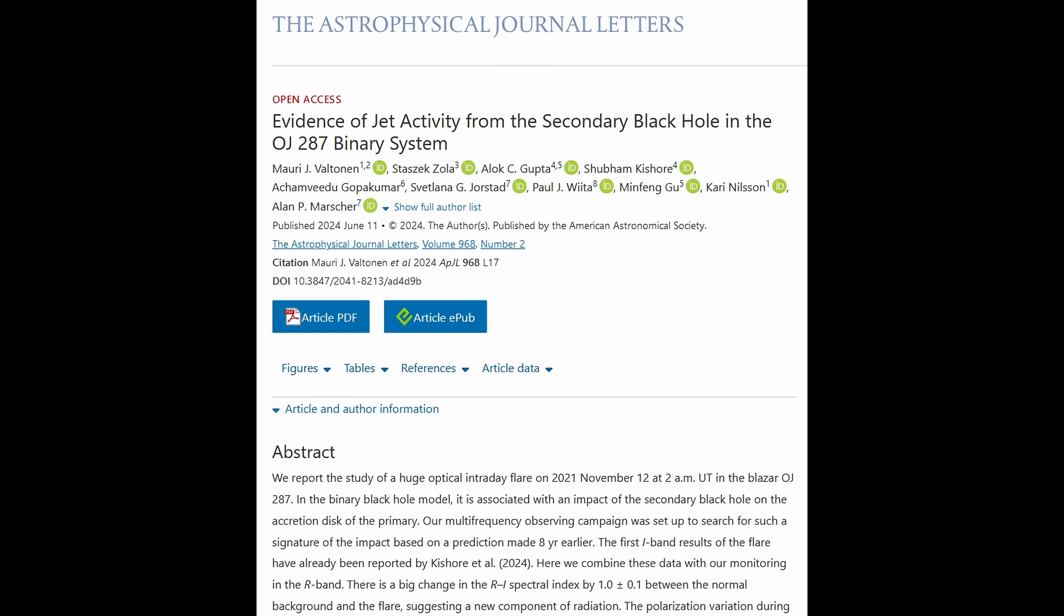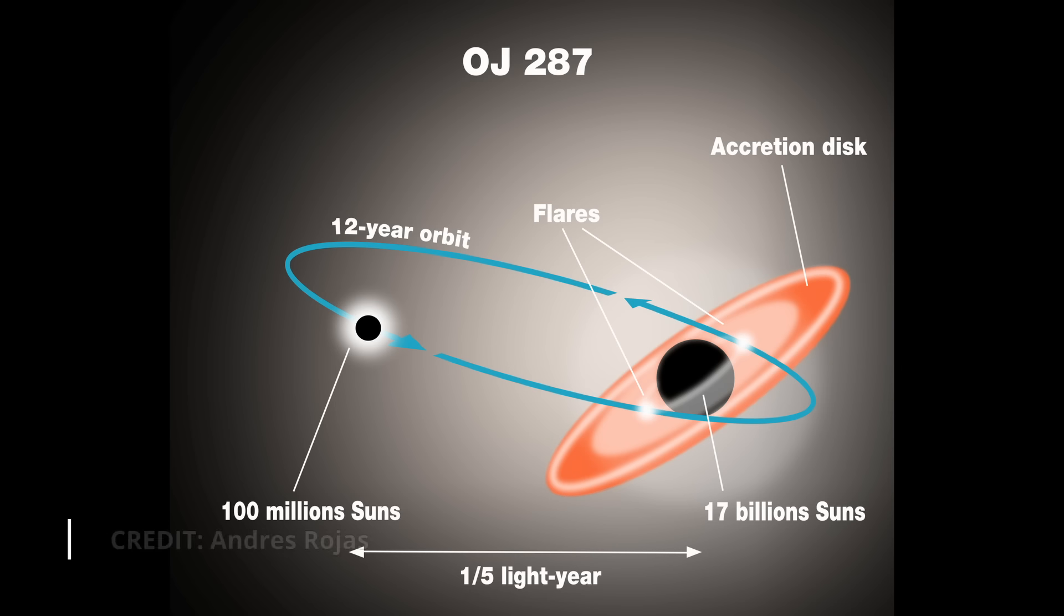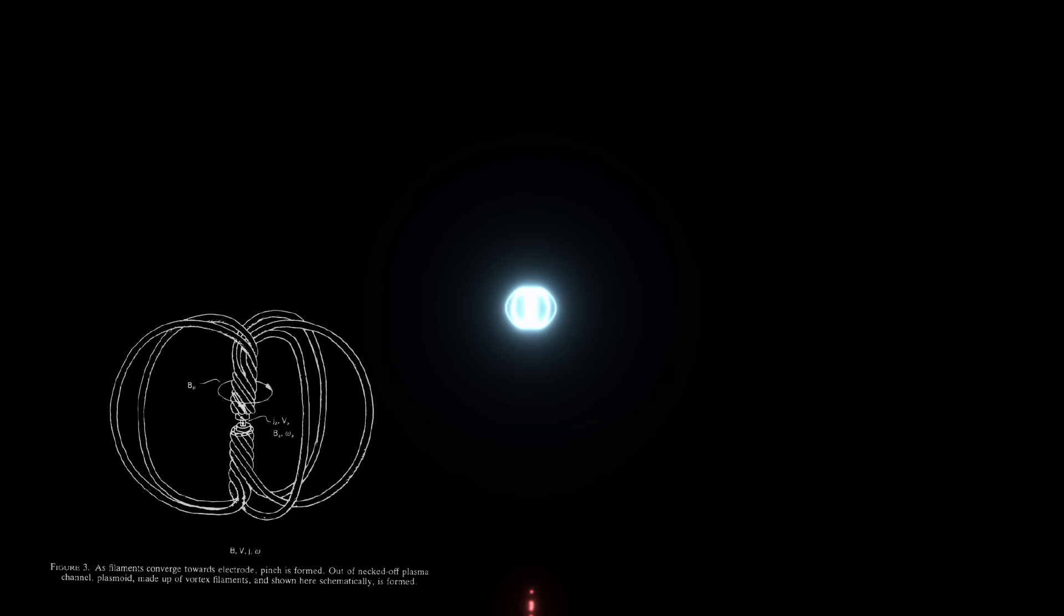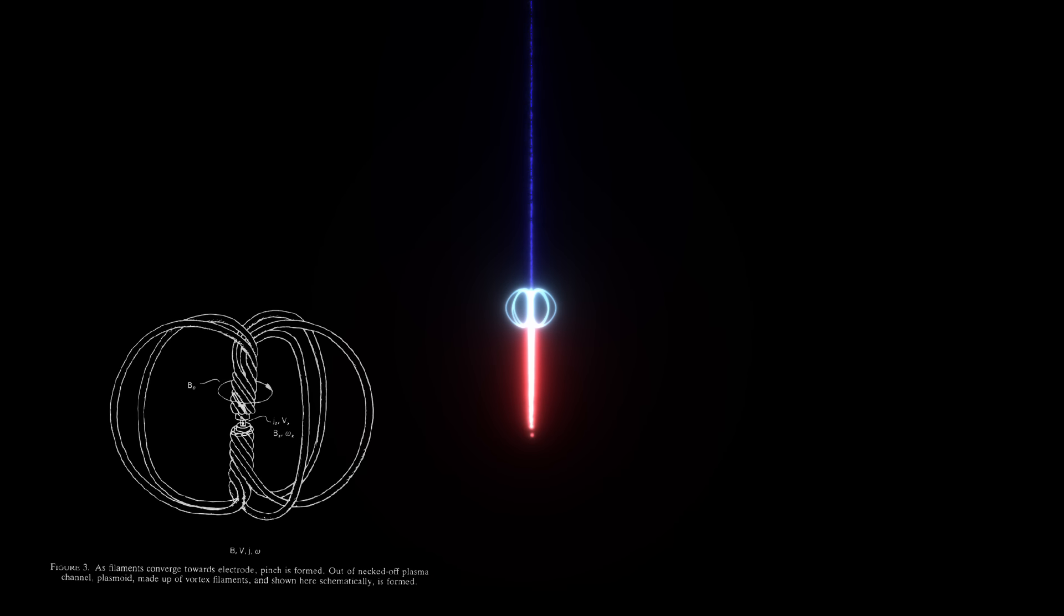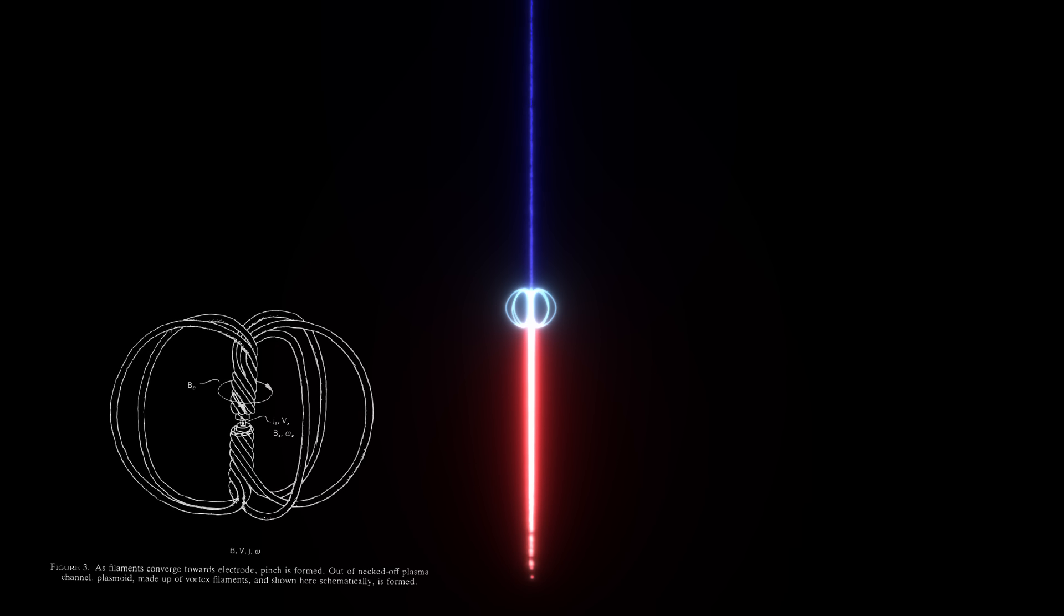In the paper, the flare on November 12, 2021 is attributed to a secondary black hole impacting the primary black hole's accretion disk. In the plasmoid model, such a flare could be interpreted as a result of intense magnetic reconnection events.